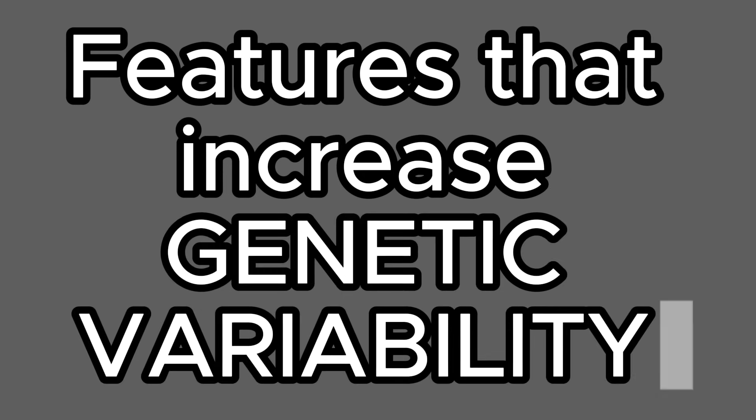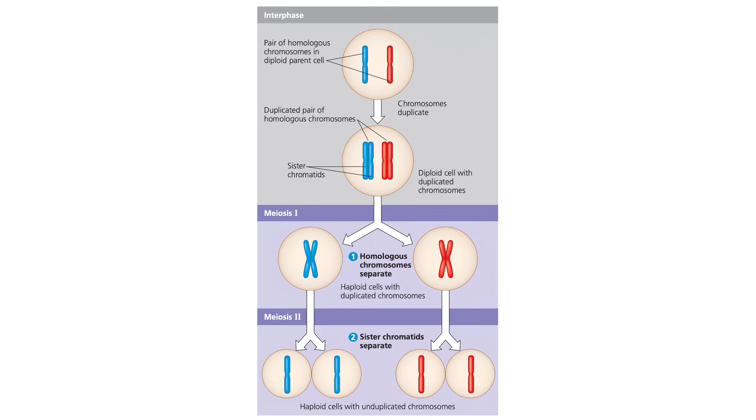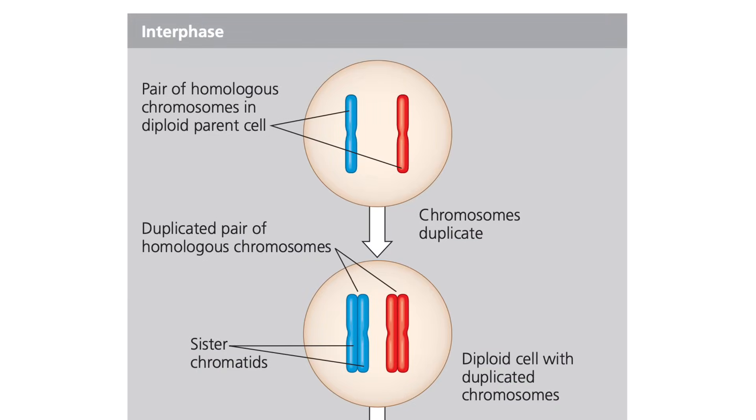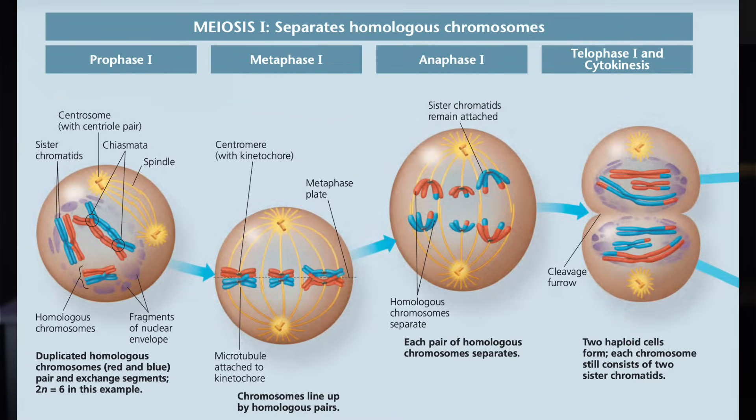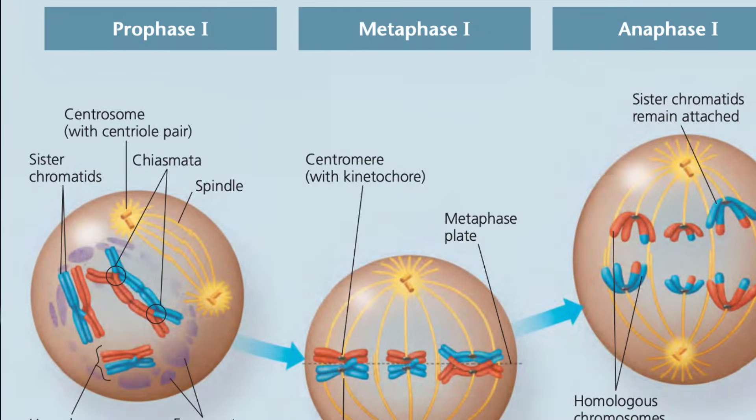Let's take a look at how that works. For this unit, we are focusing on very specific features of meiosis, especially paying attention to the features that increase genetic variability in the gametes that are produced. Starting with a germ cell, which would be a diploid cell, we undergo the S phase of interphase, synthesizing copies of each chromosome. And entering meiosis I, we have the most important phase that you'll need to know, which is prophase I.